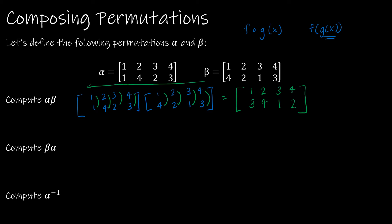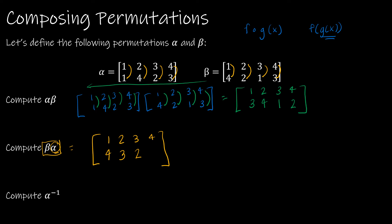Now going in the other order — beta∘alpha — same idea. Feel free to rewrite it or not. This says do alpha first, then do beta. Starting with one: in alpha, one maps to one; what does beta do to the result of one? It maps it to four. Now let's start at two: alpha maps two to four, but beta takes four and maps it to three. Three in alpha gets mapped to two, but two gets mapped to two in beta. And then four maps to three in alpha, and three maps to one in beta.